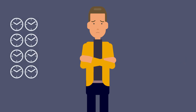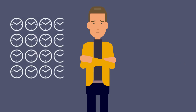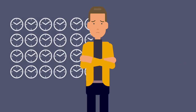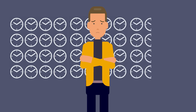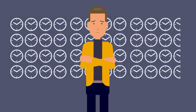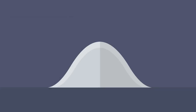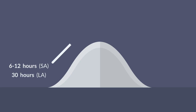Withdrawal symptoms can last for days, weeks, and in some cases, such as with methadone withdrawal, months. Typically, withdrawal sets in 6 to 12 hours post-use for short-acting opioids, and 30 hours post-use for long-acting opioids. Symptoms usually peak around 72 hours after the last use.